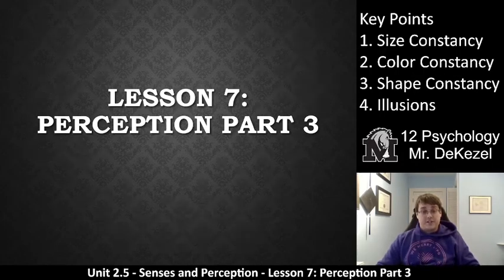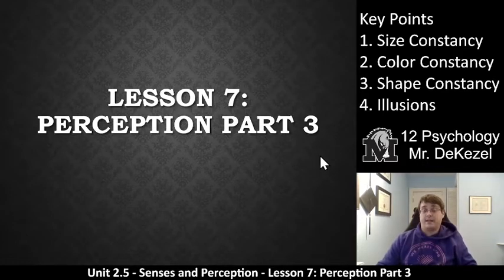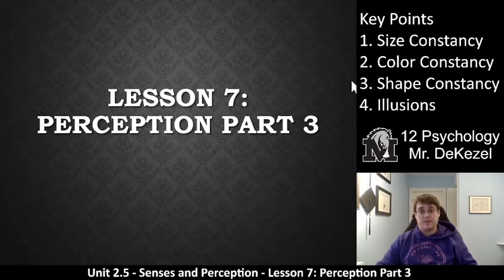Hello grade 12 psychology class, welcome back to another lecture. We have lesson 7 and, you guessed it, perception part 3. We have constancy as our key points — 1, 2, 3 — and then we talk about illusions.